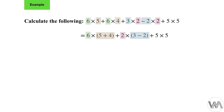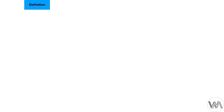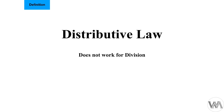So grouped together we have: six times (five plus four), plus two times (three minus two), plus five times five. Now we work out the brackets first: six times nine, plus two times one, plus five times five. That gives us 54 plus 2 plus 25, which adds up to 81. It's also very important to remember that the distributive law applies to addition, subtraction, and multiplication — but not for division. Do not use this law for division.